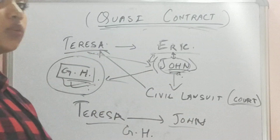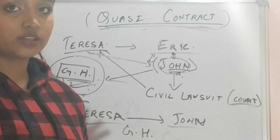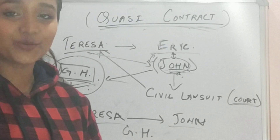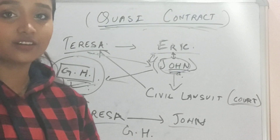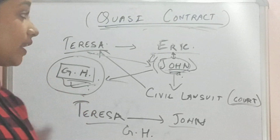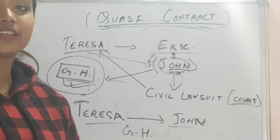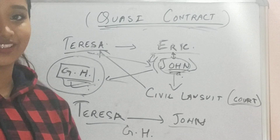This is what a quasi contract helps you to do — because John over here did not have any contract or agreements, and he put all his investment into the greenhouse without taking any advance from Eric. He was facing a problem regarding the money, and now due to the court's quasi contract, Teresa has to pay all the money to John. This was the short brief of quasi contract. I hope you all understood the topic well, and thank you so much for watching.